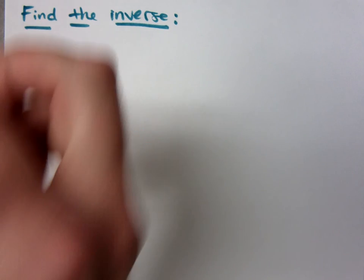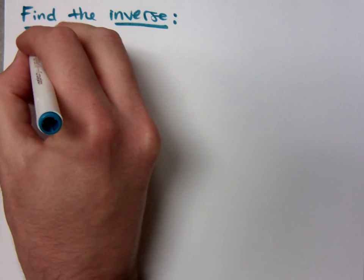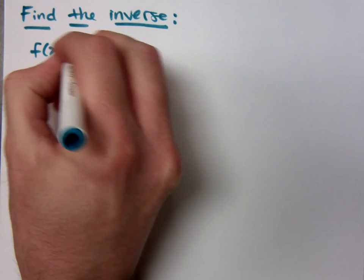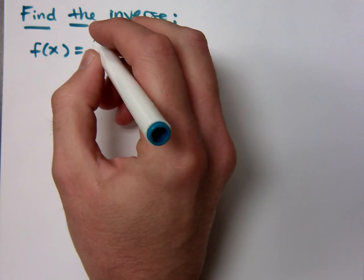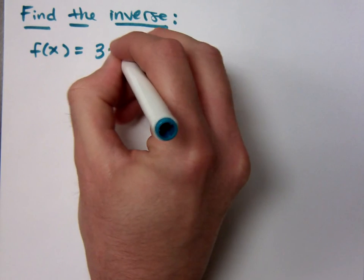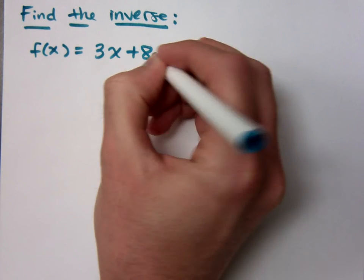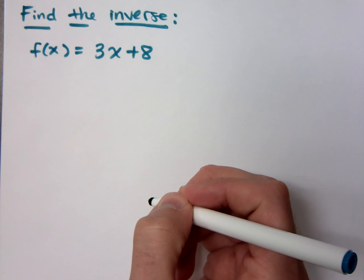So let's see if we can find the inverse for something like this: f of x equals 3x plus 8. Did we do that last time? We did? Alright.